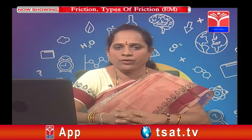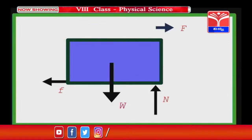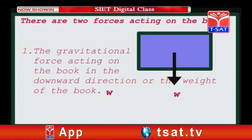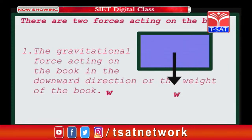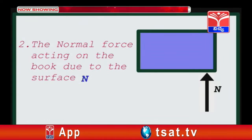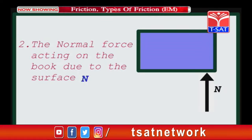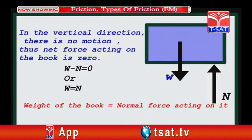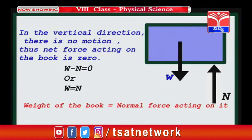Let us observe the forces acting on the book placed on the table. W and N are acting in the vertical direction, and capital F and small f are acting in the horizontal direction. There are two forces acting on the book in the vertical direction: gravitational force acting downward, which is the weight of the book, represented by capital W. Second, the normal force acting on the book due to the surface, represented by capital N, acting upwards. In the vertical direction there is no motion, thus the net force is 0. W minus N equals 0, so W equals N. Hence, the weight of the book is equal to the normal force.